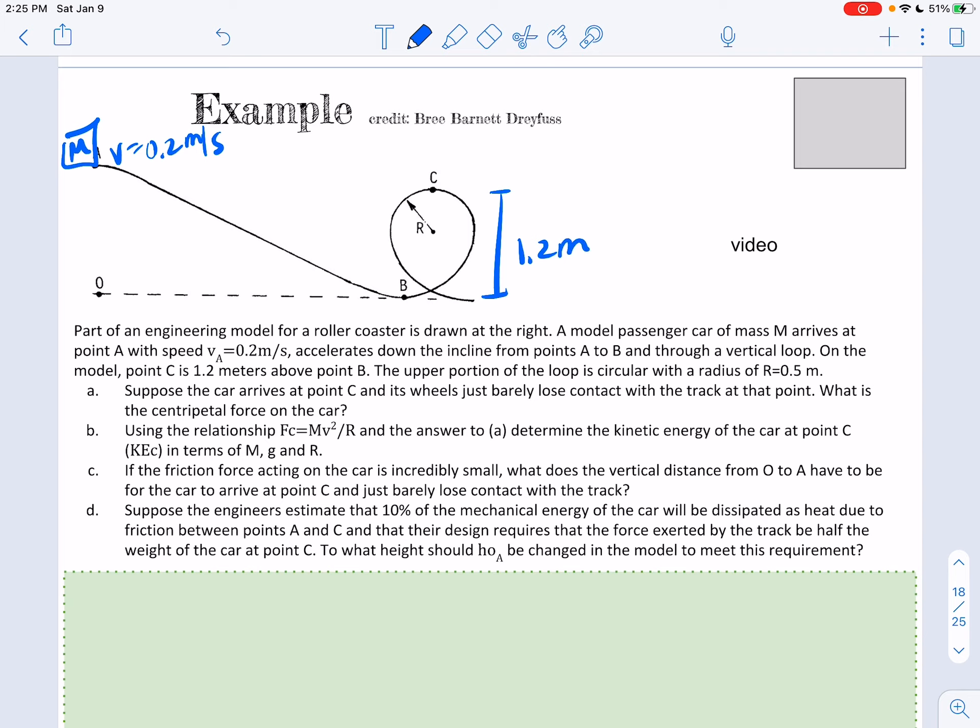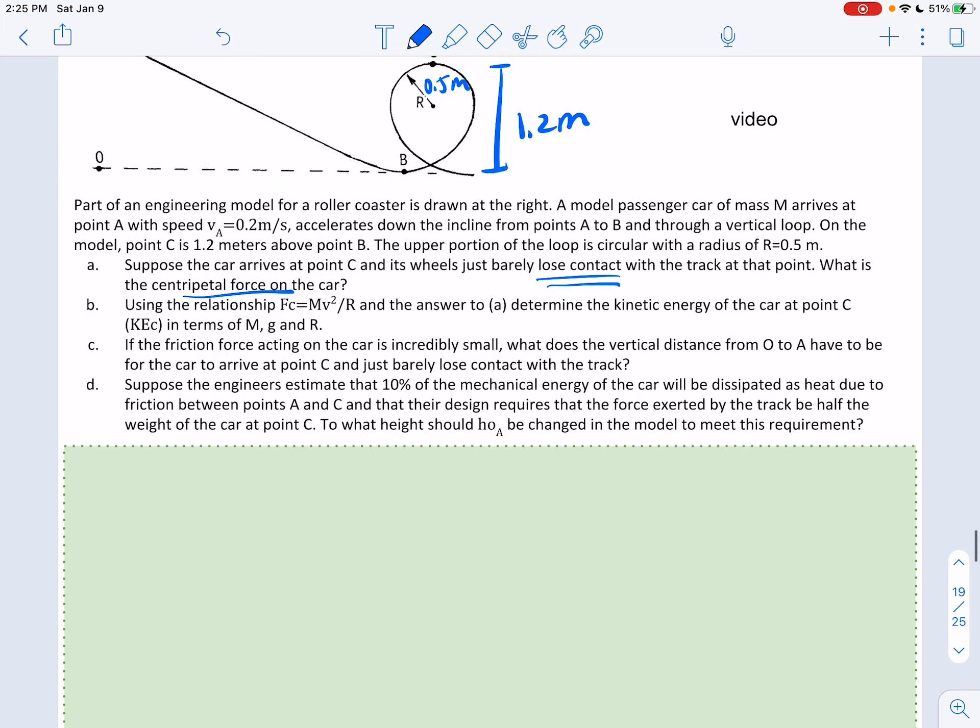The upper portion of the loop is circular with radius of 0.5. So it's not quite a full circle, right? It's a little bit of a teardrop shape. Suppose the car arrives at point C, its wheels just barely lose contact with the track at that point. What is the centripetal force on the car?